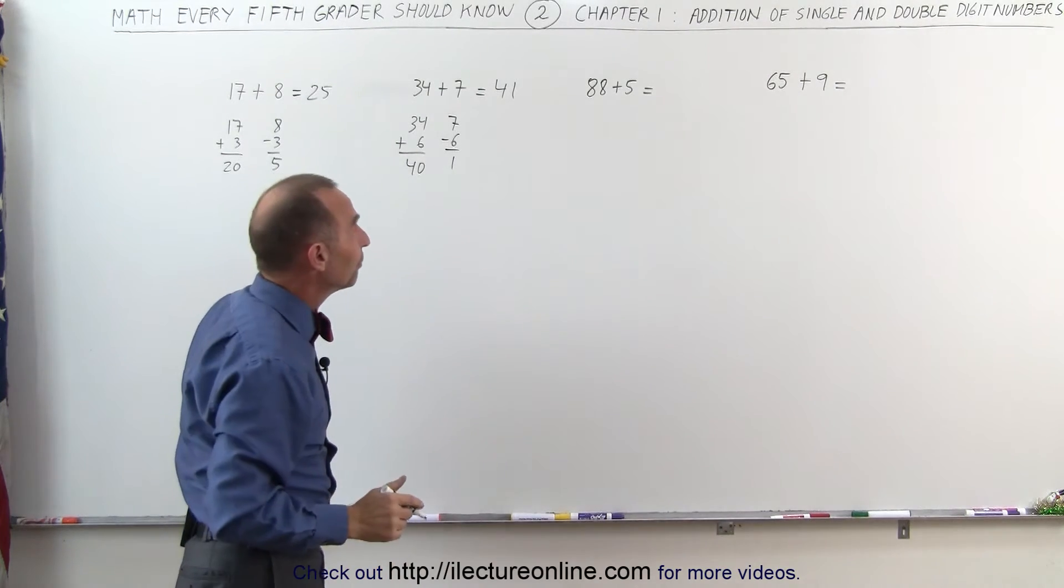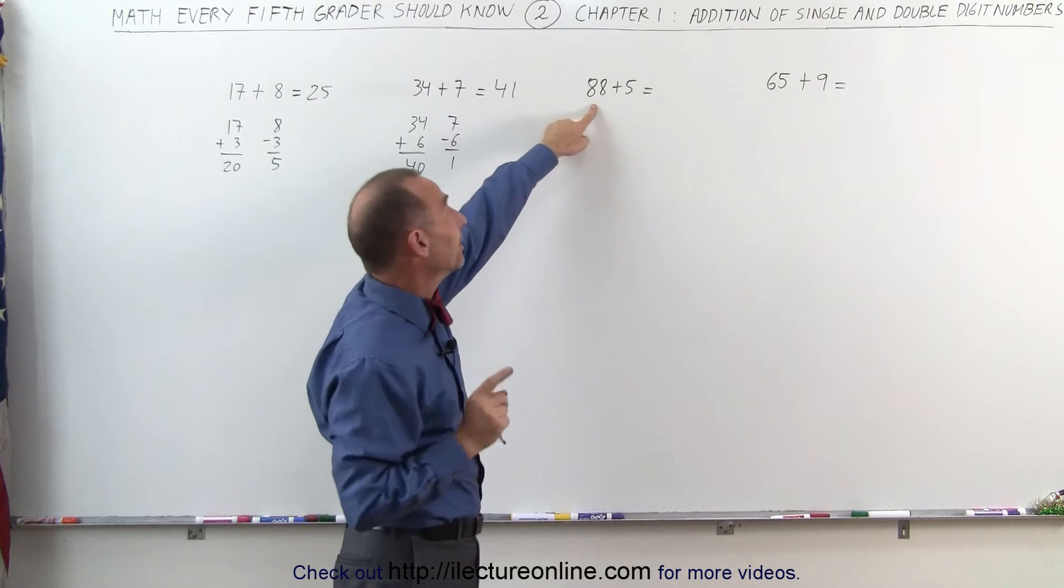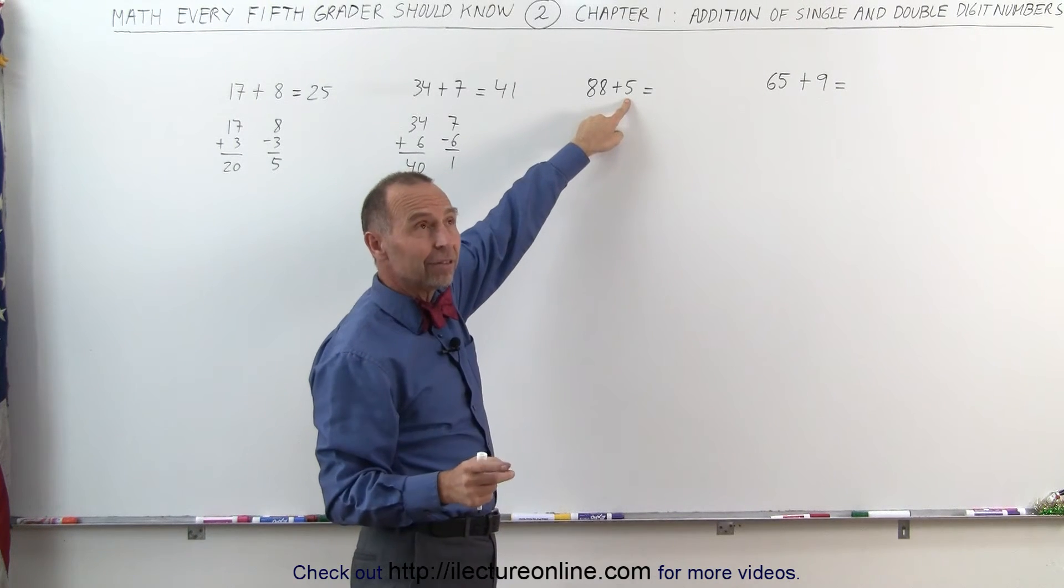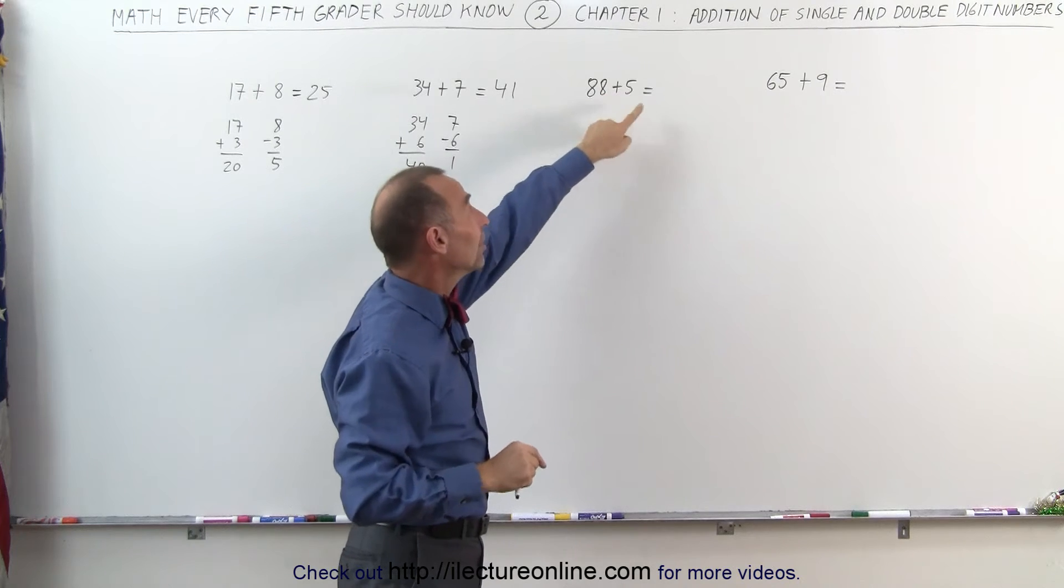88 plus 5. Again, how much do I need to add to 88 to get 90? 2 more will give me 90. Take 2 away from 5, that gives me 3. 90 plus 3 is 93.